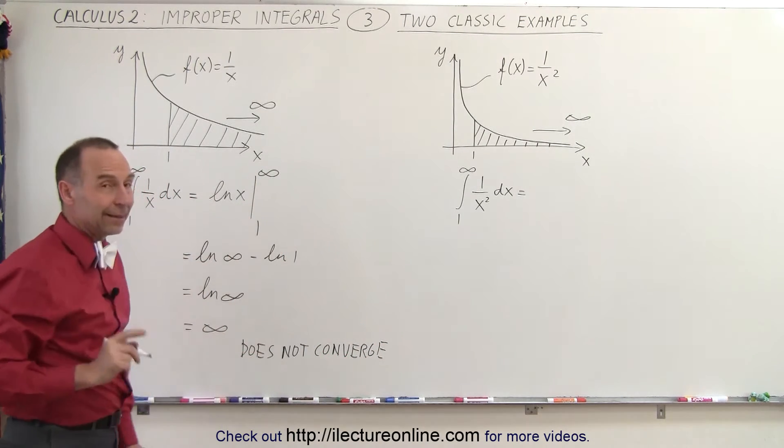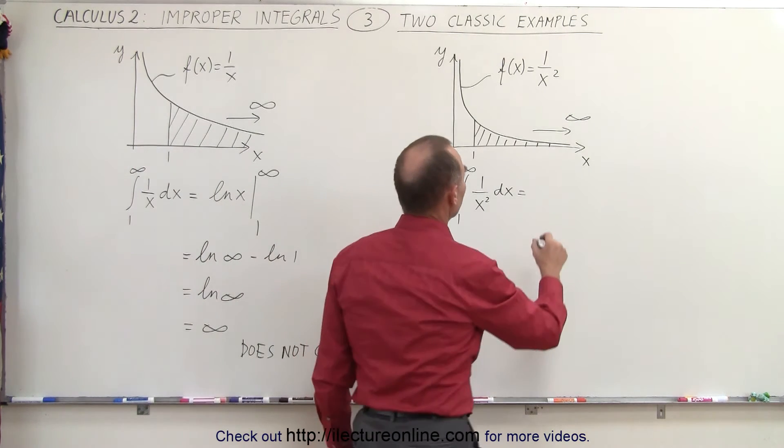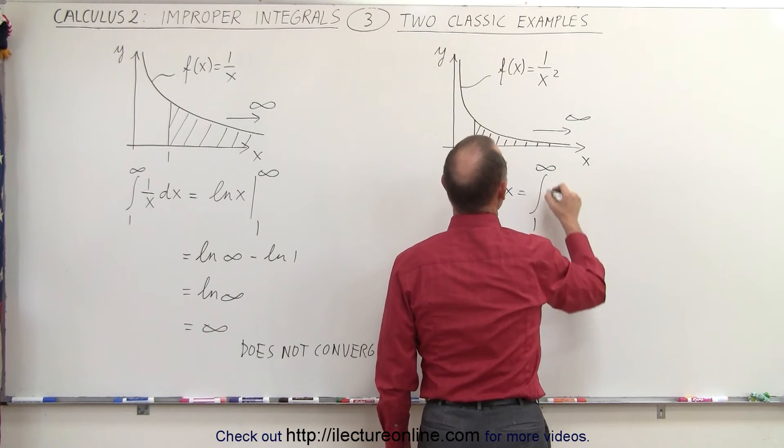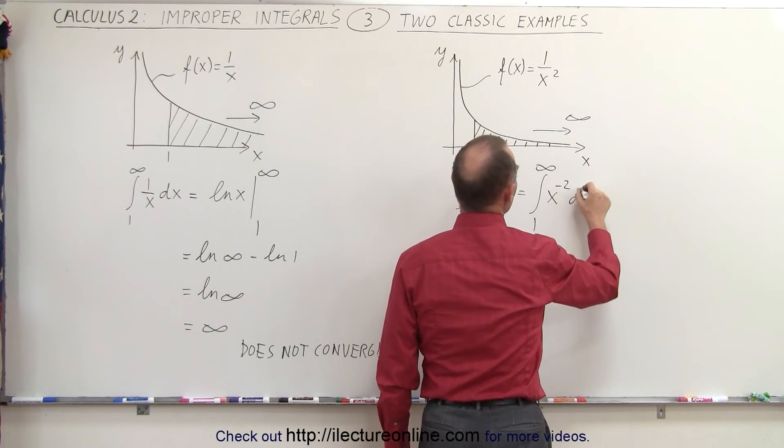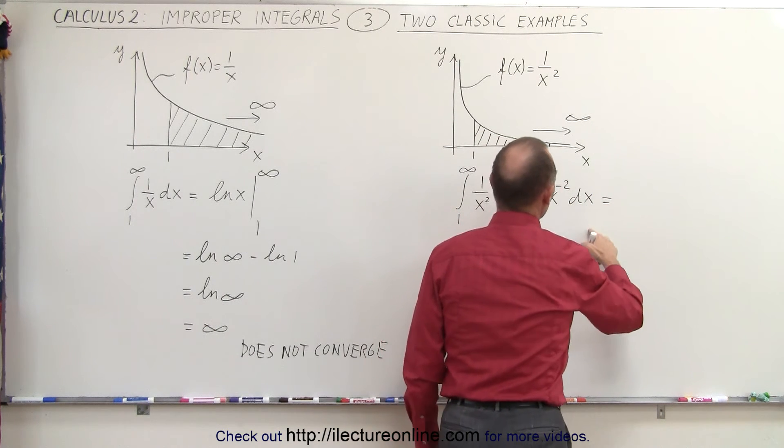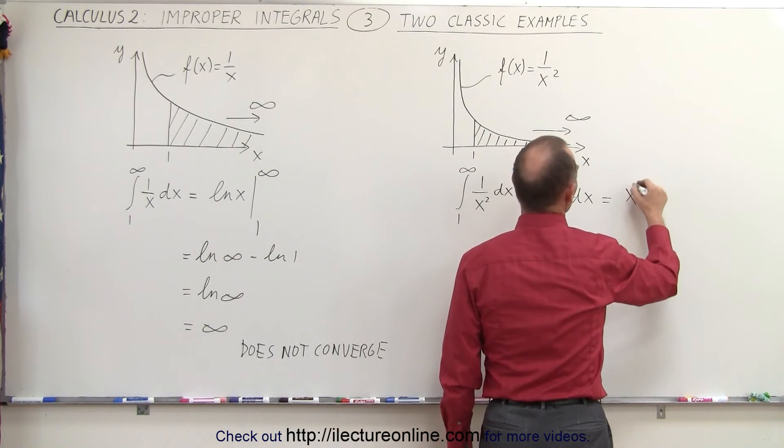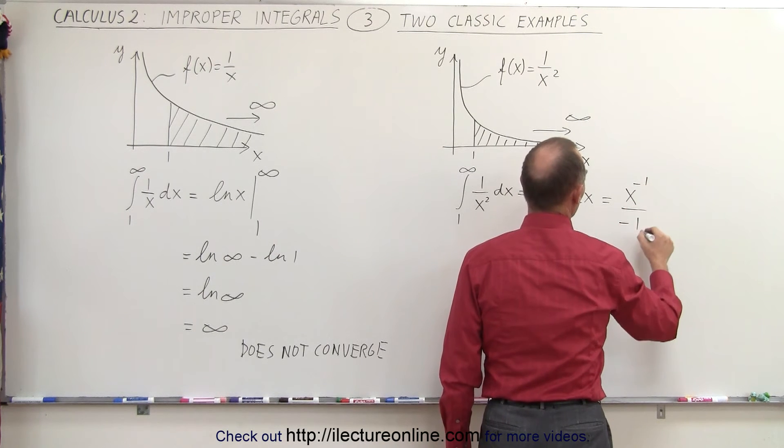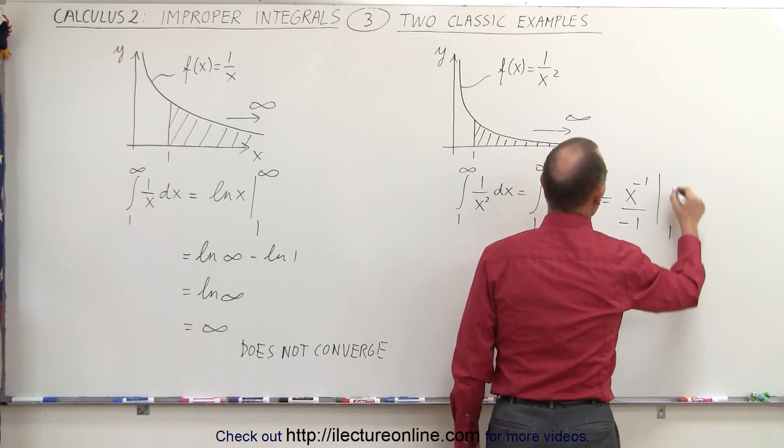When we integrate that integral, that's a little bit different. This can be written as the integral from 1 to infinity of x to the minus 2 dx. So when we integrate, we add 1 to the exponent, x to the minus 1, divide by the new exponent and evaluate it from 1 to infinity.